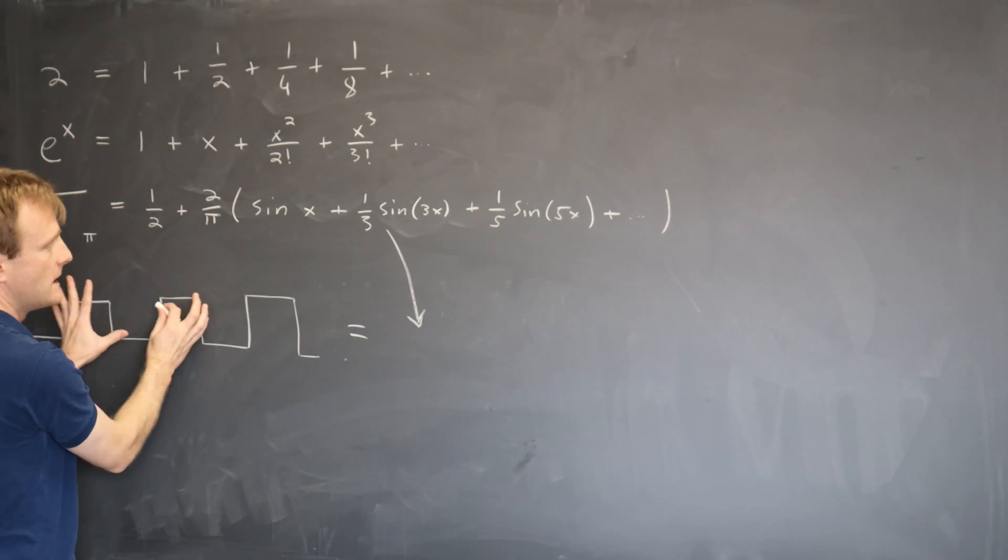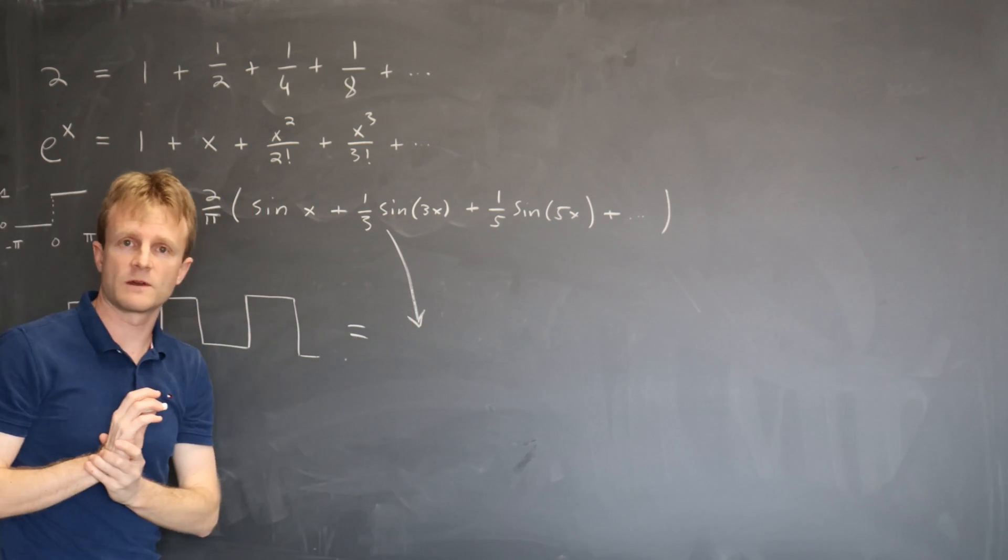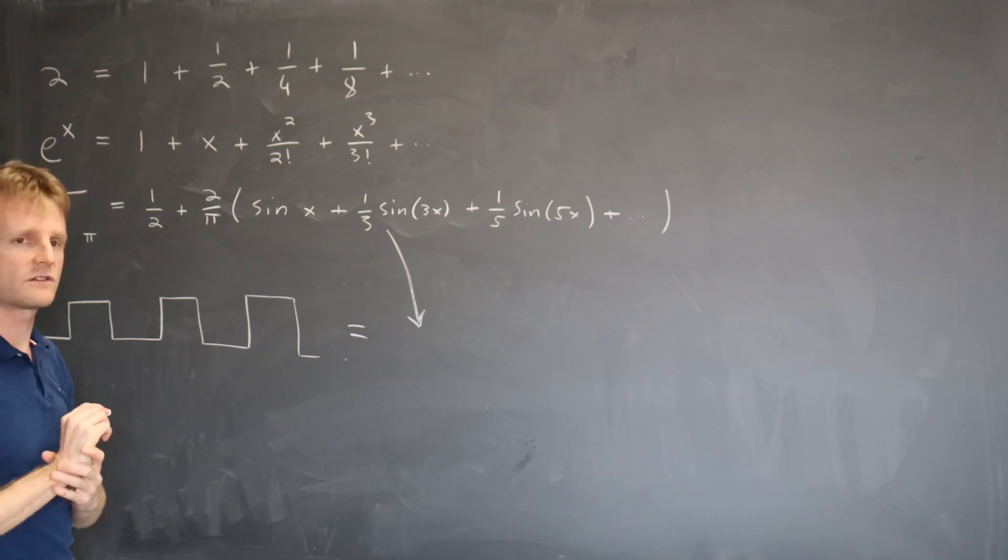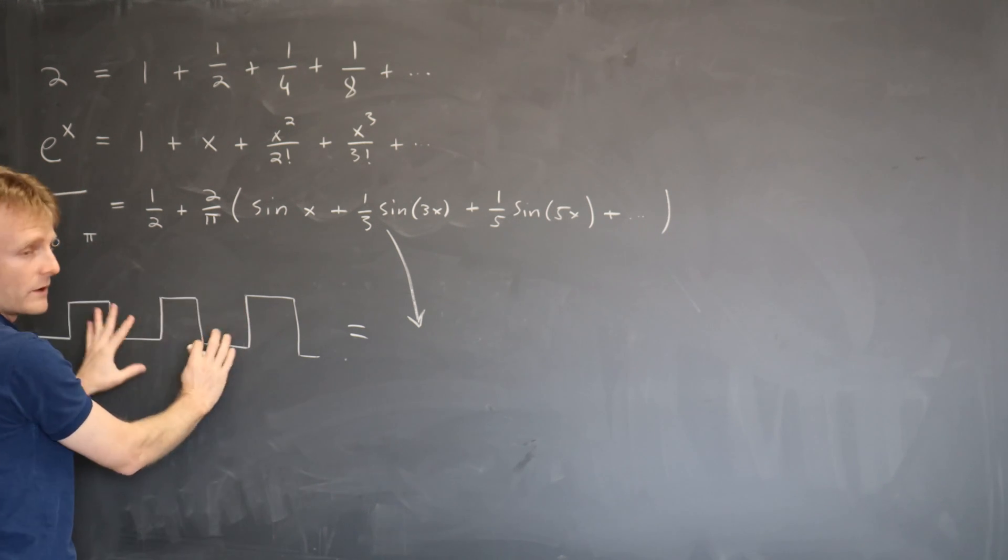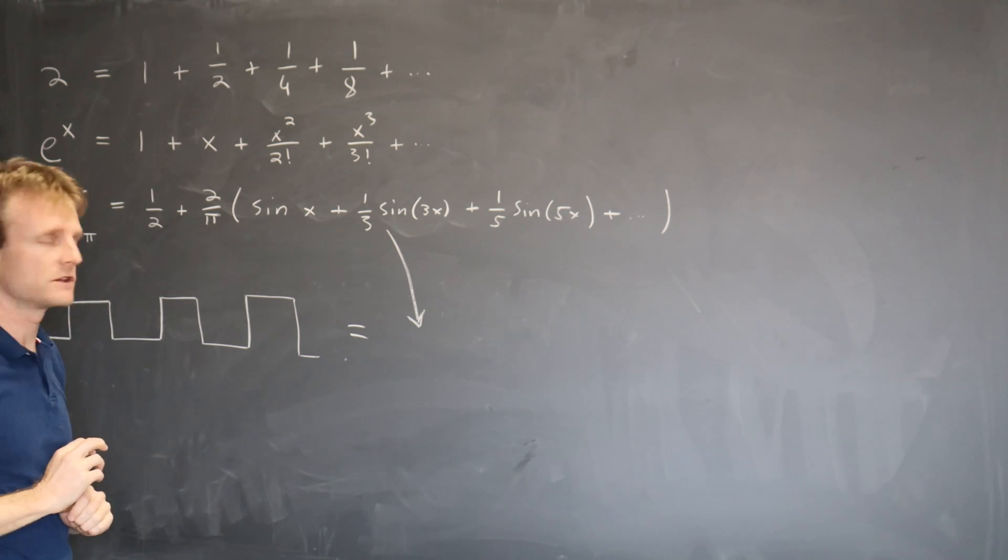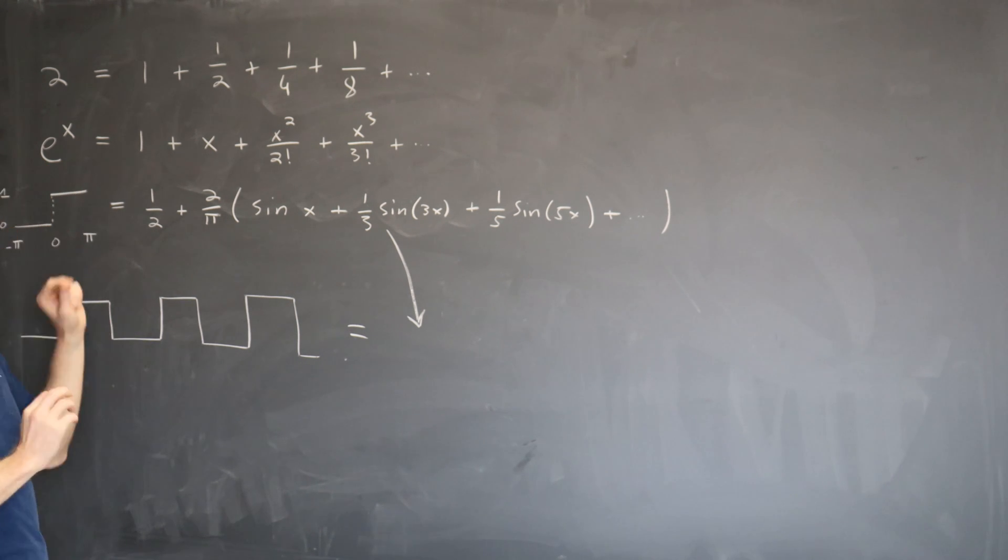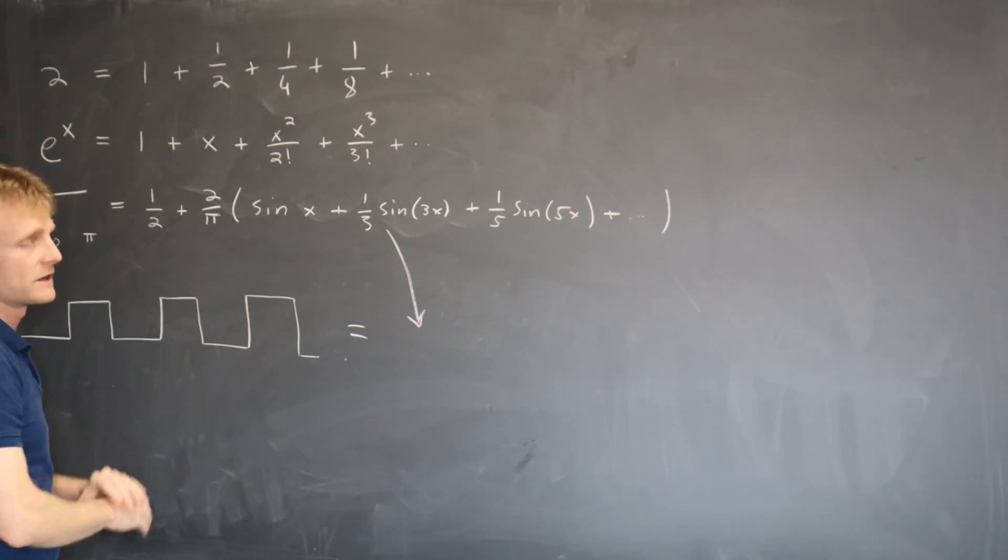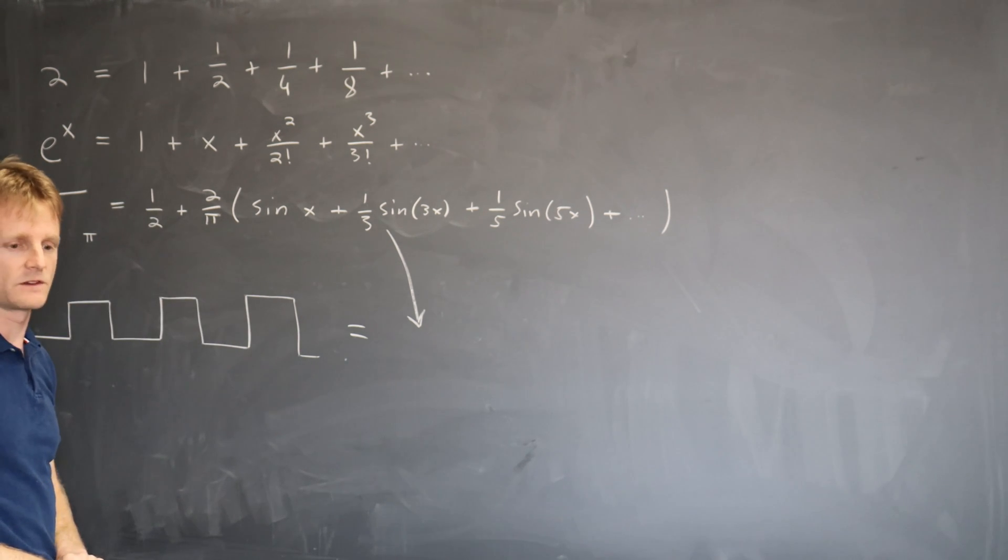Take some kind of wave and approximate it in terms of a sum over sine and cosine waves. But in this class, we're not going to really take this viewpoint very much. We're mostly going to just think about functions defined on a canonical range minus pi to pi. And we're going to expand those functions in terms of sines and cosines.